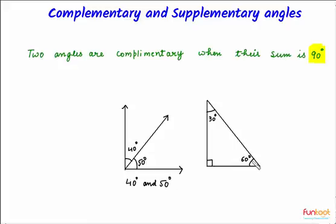Take the next example. Here we have a right angle triangle and this angle is 30 degrees and this is 60 degrees, and if we add the two, we get 90 degrees. So 30 degrees and 60 degrees are also complementary angles. Complementary angles are always a pair of angles which add up to 90 degrees.